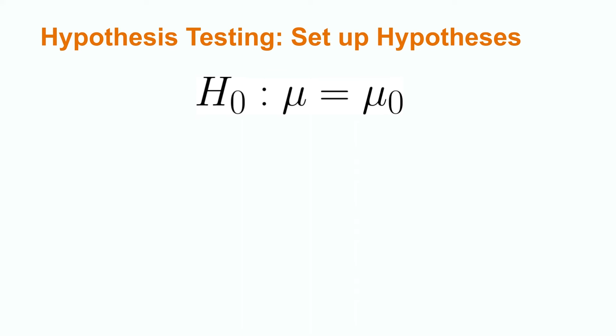We begin our hypothesis test by setting up our null and alternative hypotheses. The null hypothesis is always in the form of H₀: μ = μ₀. Please note that μ₀ is a general way to symbolize our hypothesized value of the mean and μ is a symbol for the population mean. The next hypothesis that is needed is our alternative hypothesis.